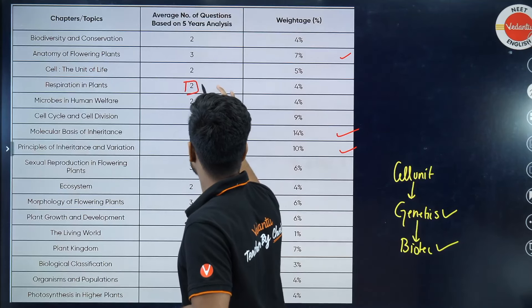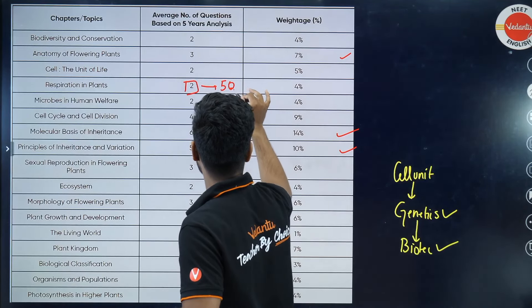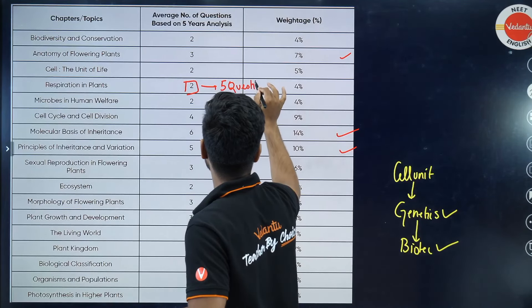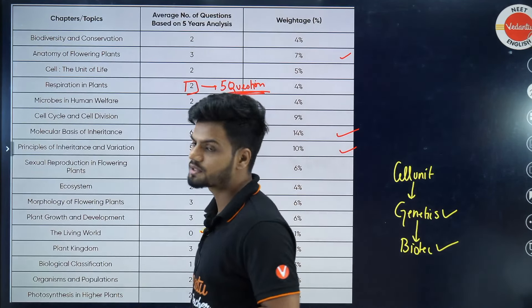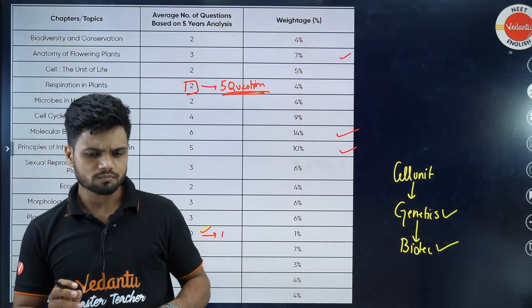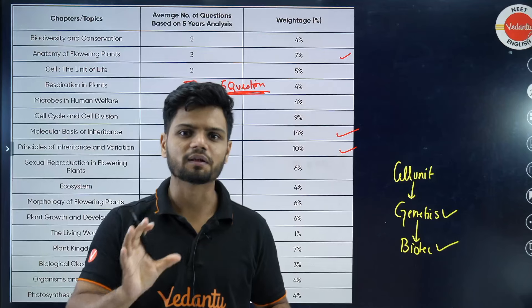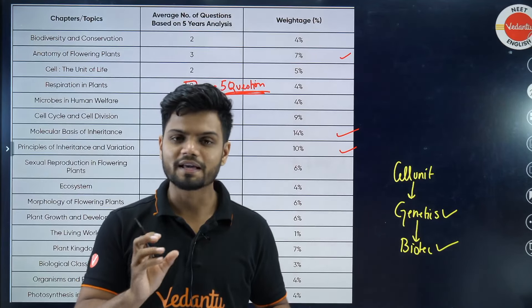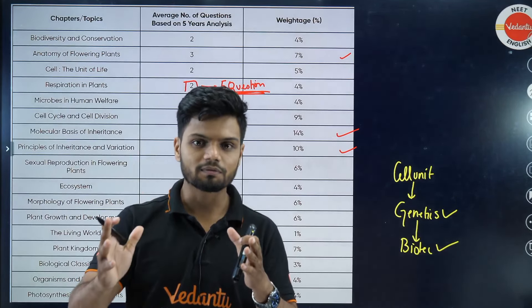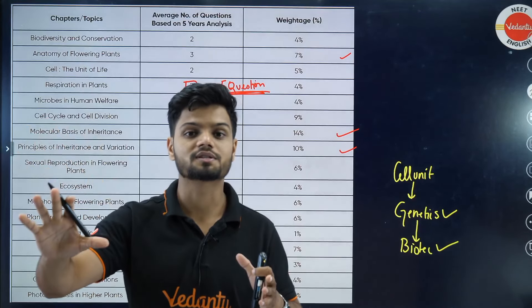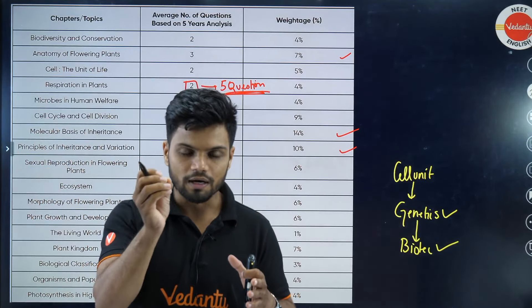Students, if you look at the trends, Respiration in Plants shows two questions on average. But in NEET 2024 we had five questions from Respiration in Plants — five questions! As I keep saying, trends are there but NTA is the final boss. They can suddenly decide to give more questions from any chapter, so NTA is unpredictable.